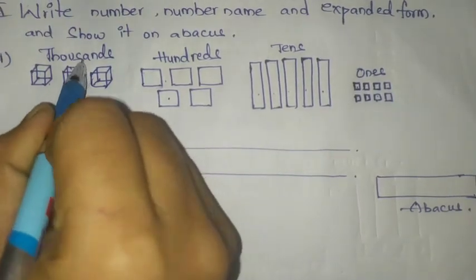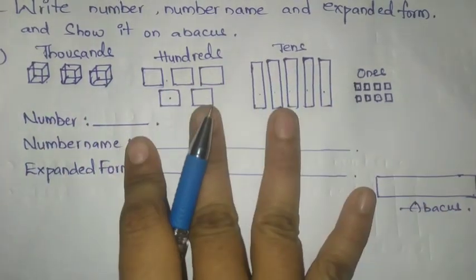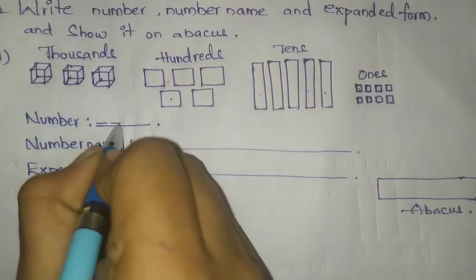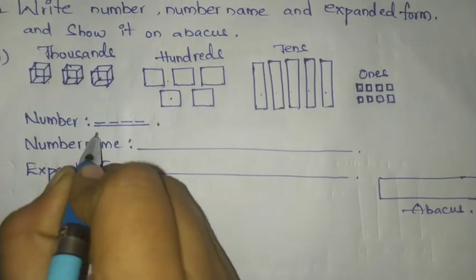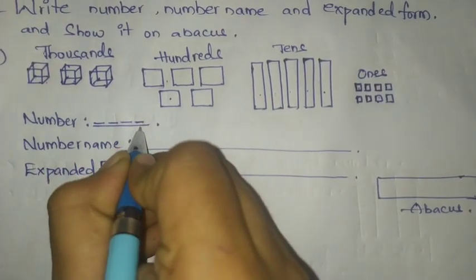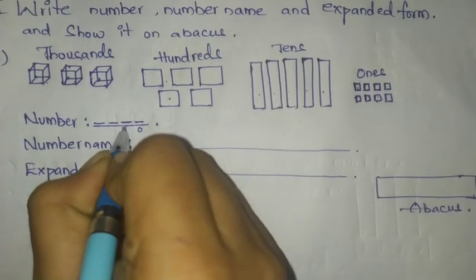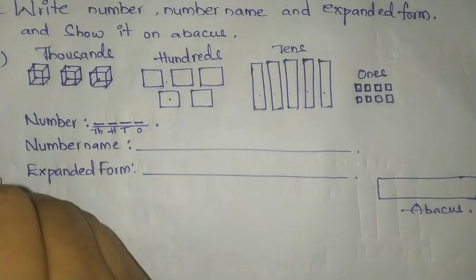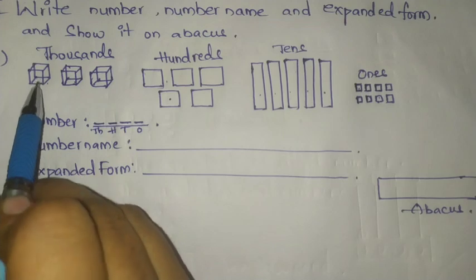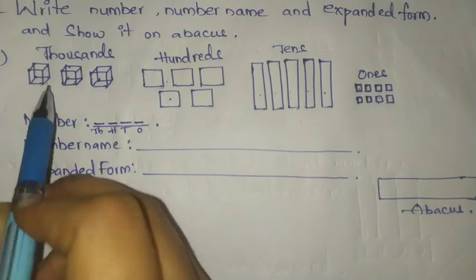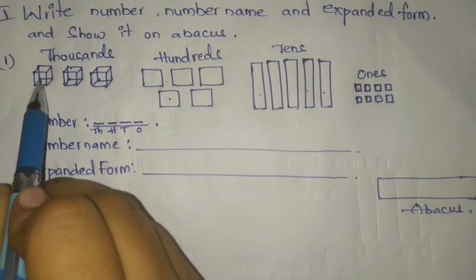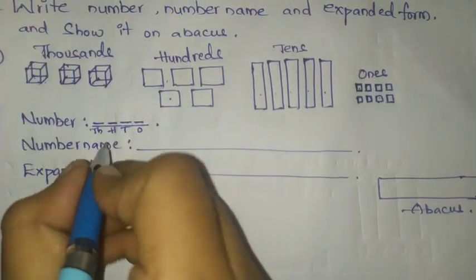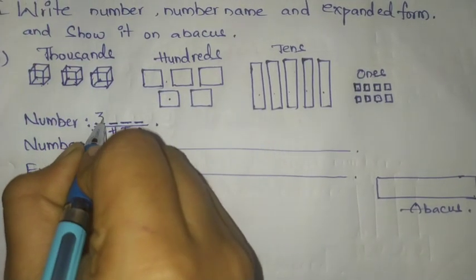Now look here. Thousands given means it is a four digit number, so we take four places: ones, tens, hundreds, thousands. How many thousands are here? One, two, three — three thousands. So we write 3 at the thousands place.